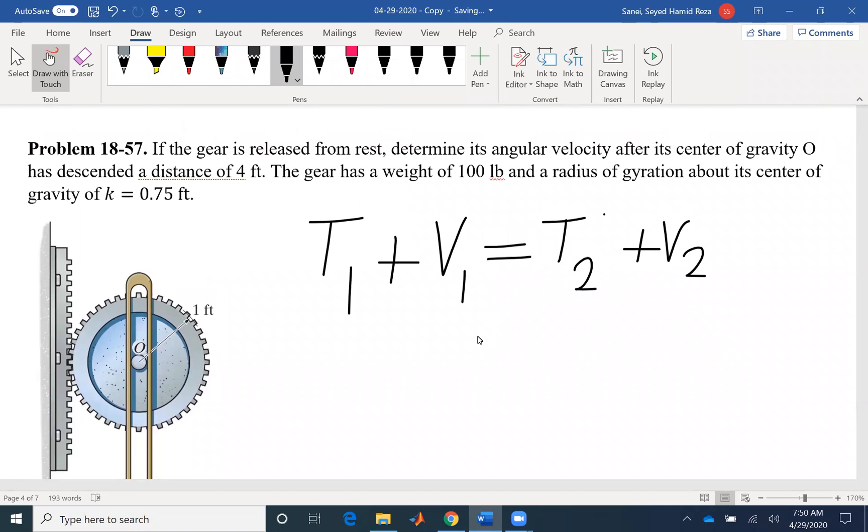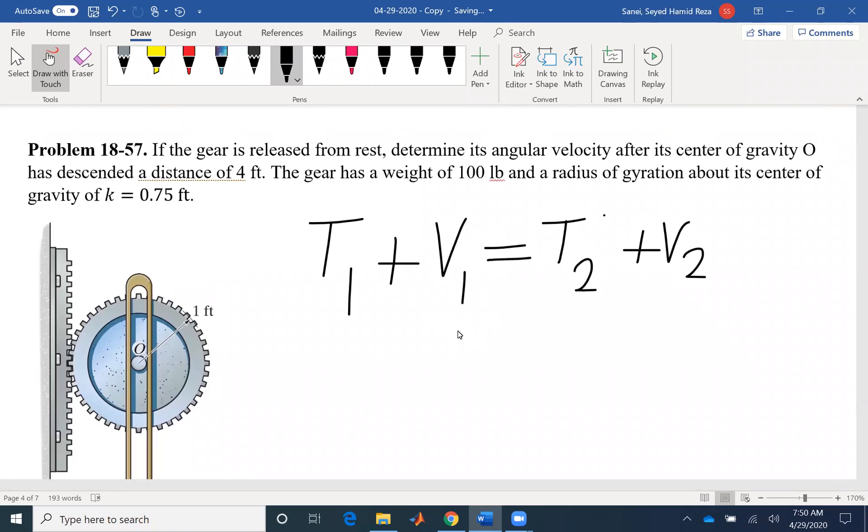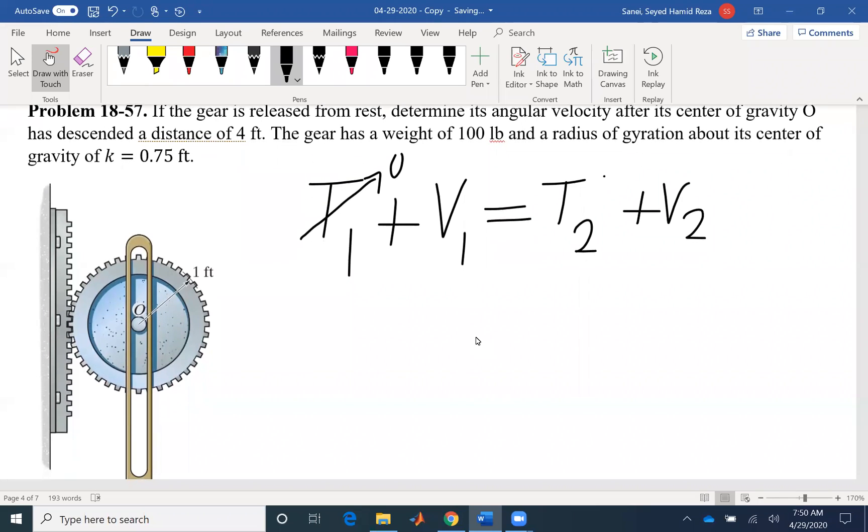If I look at the problem, the gear is released from rest, so the initial kinetic energy is zero. The potential energy, I have to see what potential energy I have. I don't have any spring, so I don't have any elastic potential energy. I have gravitational potential energy, but I can get rid of that if I set my coordinate here in the initial position. Just start from here. So that would be zero.